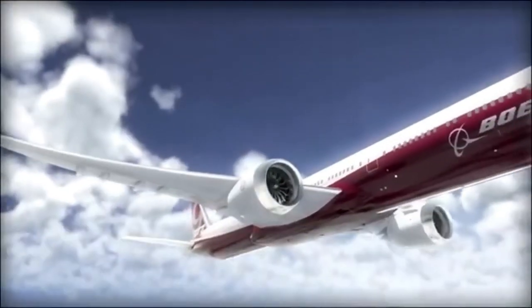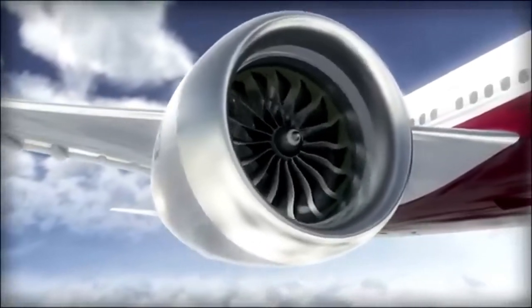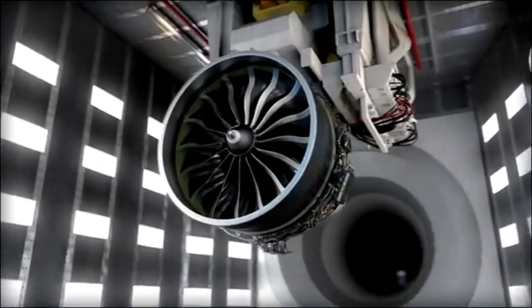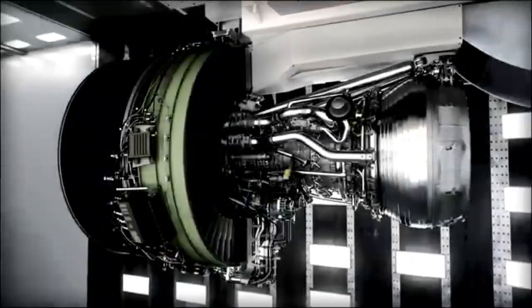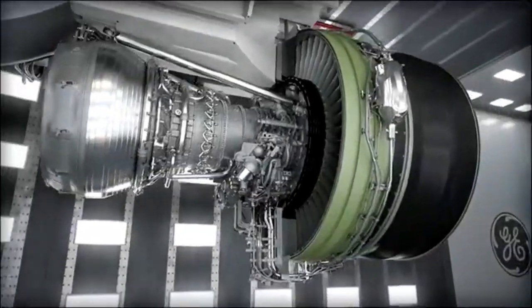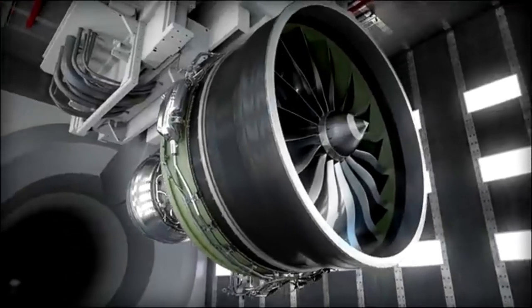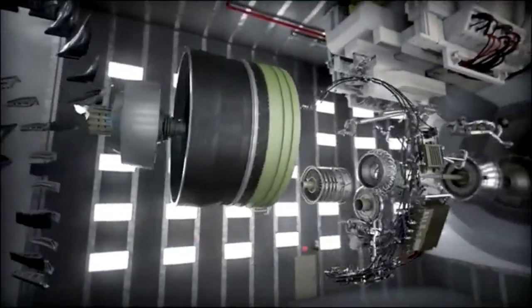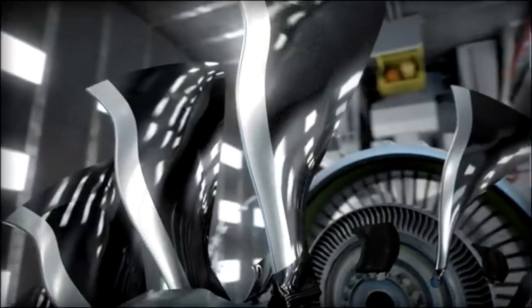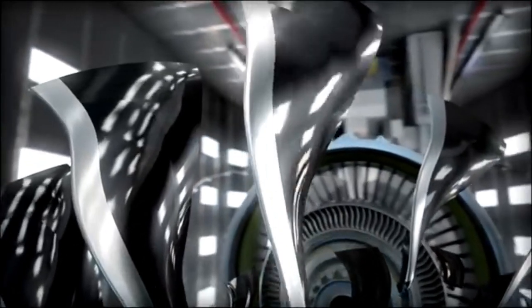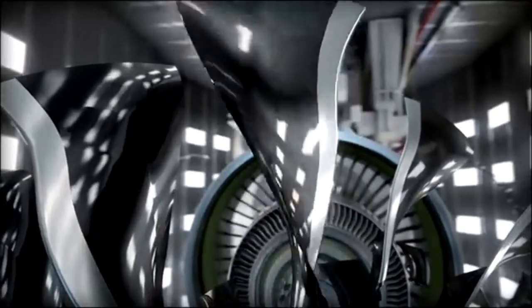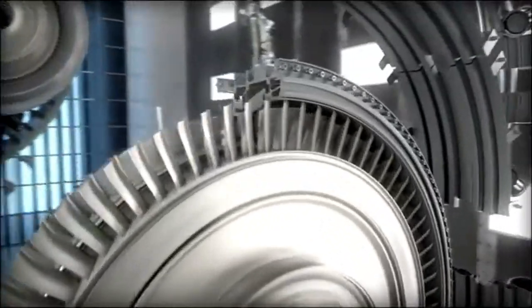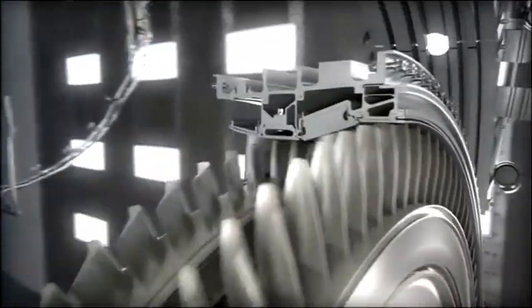First up on our list is the GE9X, developed by General Electric for the Boeing 777X. This powerhouse boasts the largest fan diameter of any commercial engine, measuring over 11 feet. The GE9X features advanced ceramic matrix composites that withstand higher temperatures, making it more fuel-efficient and environmentally friendly. One of the standout innovations of the GE9X is its composite fan blades and cases, which are lighter and more durable. The engine also incorporates advanced aerodynamics with its new high-pressure turbine and improved blade designs.